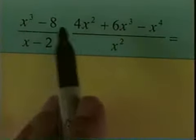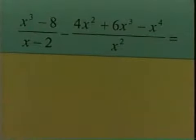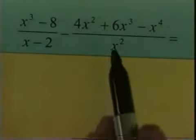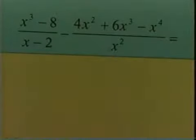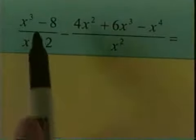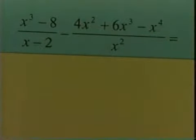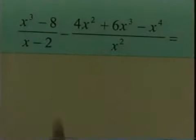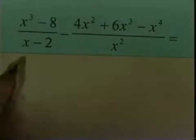We have x cubed minus 8 divided by x minus 2, minus 4x squared plus 6x cubed minus x to the fourth divided by x squared. We have two division problems and a subtraction. Of course, I do division before I do the subtraction, so I'm going to do the two division problems. To do x cubed minus 8 divided by x minus 2, I need to do long division.